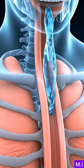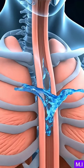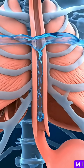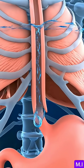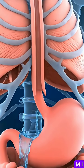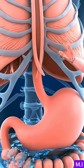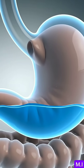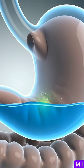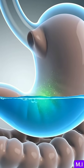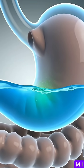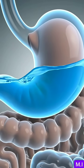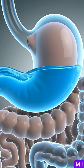Water enters through the mouth and flows down the esophagus into the stomach through smooth muscular contractions called peristalsis. A small amount of water is absorbed directly through the stomach lining, but most of it continues into the small intestine.